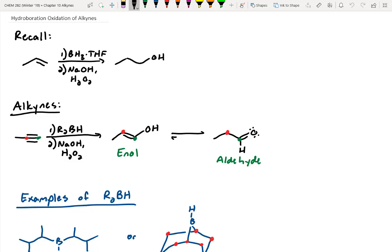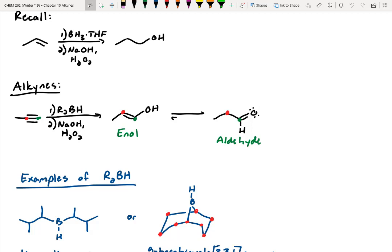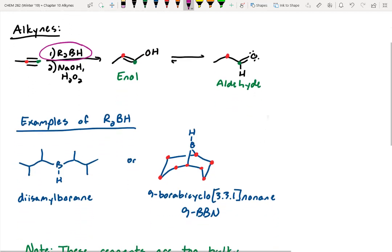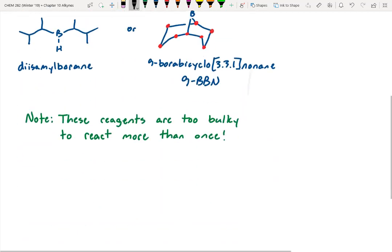All right, so last week we finished up talking about hydroboration oxidation of alkynes. We said with alkenes that you can do anti-Markovnikov addition of alcohols using borane, specifically borane coupled to THF, but with alkynes that borane reagent is far too reactive, so we had to switch to something really bulky. The borane reagents we use were diisamyl borane or 9-BBN, and the reason we use those is they're so bulky they won't react more than once. One thing we did talk about though was in this reaction we go through this enol intermediate that quickly tautomerizes to an aldehyde, so I did want to go back and review that mechanism.